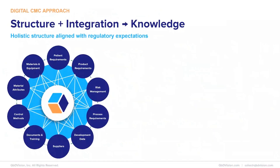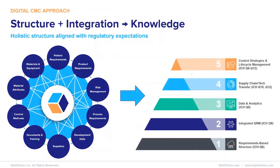Both structure and integration are necessary to build knowledge. The structure should be holistic and aligned with regulatory expectations. Here is one example of a structure that we have deployed. You see the patient requirements often reflected in a target product profile, product requirements often found in a QTPP, risk management definitions, process definitions and requirements, data, suppliers, and all the other elements of a CMC program that need to be defined over the lifecycle. Structural elements are then layered together to build a vertically integrated knowledge base, with each layer having its roots in the ICH guidelines.